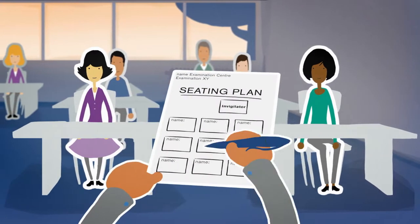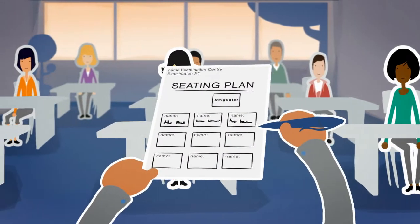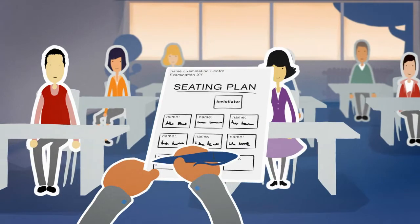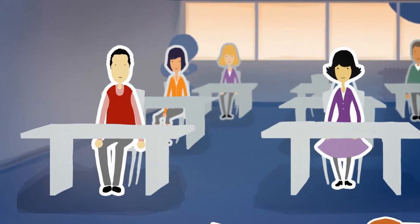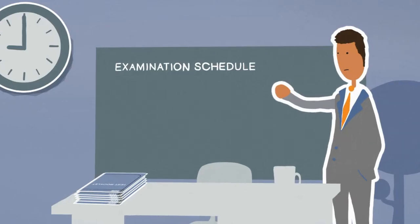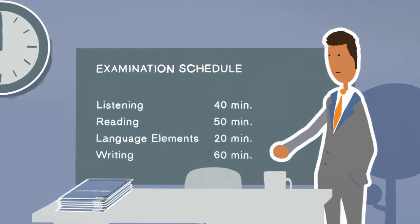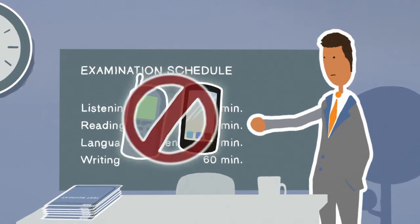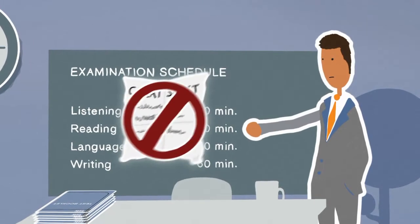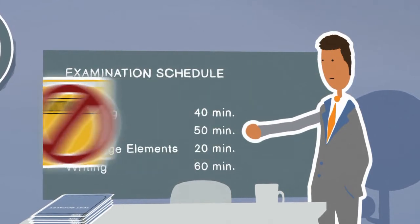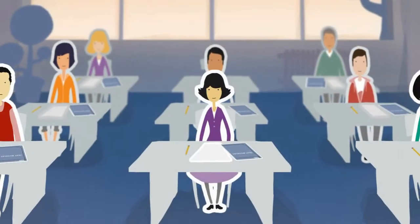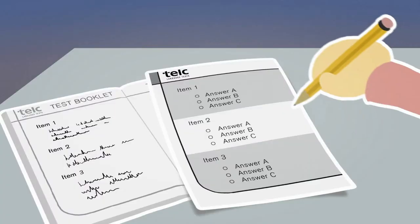Once everybody's identification has been confirmed, a seating plan is drawn up. The invigilator notifies candidates of the time schedule and reminds them of the examination regulations. When everybody's ready, the examination can begin.